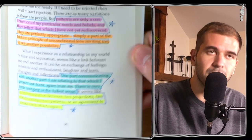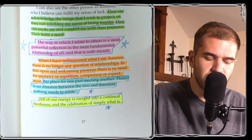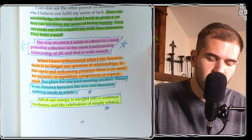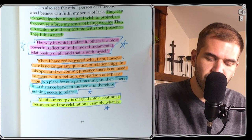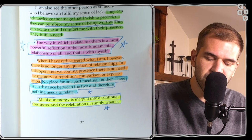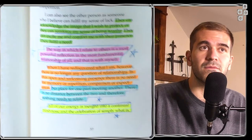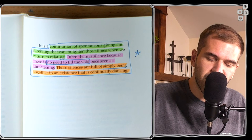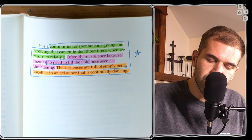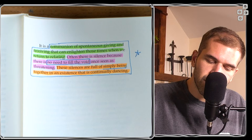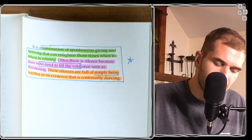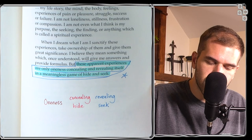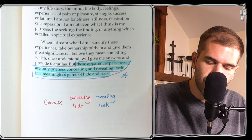The way in which I relate to others is a most powerful reflection in the most fundamental relationship of all. And that is with myself. No place for one part meeting another. There is no distance between the two, and therefore nothing needs to relate. All of our energy is merged into a continual freshness in the celebration of simply what is. Communion of spontaneous giving and receiving that can enlighten those times when we return to relating. Often there is silence because there is no need to fill the void once seen as threatening. These silences are full of simply being together in an existence that is continually dancing. These apparent experiences are only oneness concealing and revealing itself in a meaningless game of hide and seek.